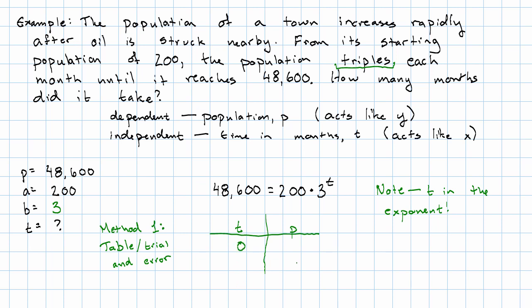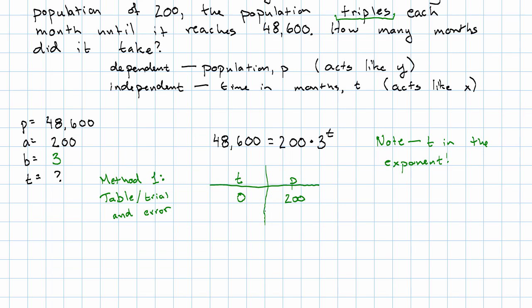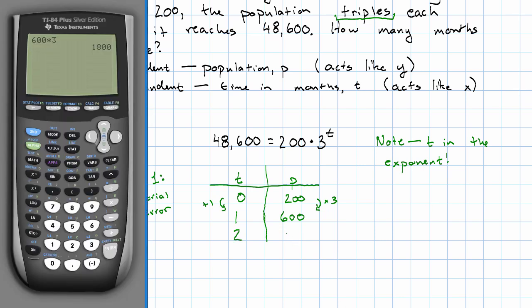When t is 0, p is 200, and then every time t goes up by 1, we'll take p times 3. So after one month the population is 600. After 2, the population is 1,800. After 3, the population is 5,400.